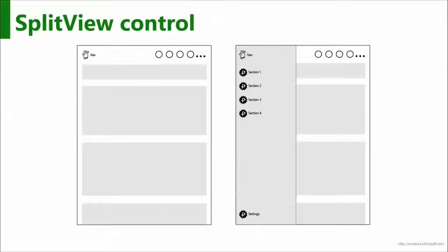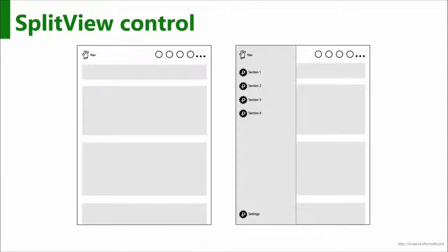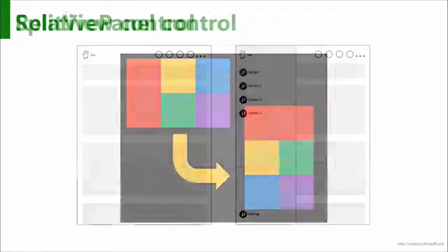Specifically, we now have the split view control. Split view is sort of a navigation affordance — it allows us to see a menu on the side. You kind of have the hamburger menu. It really has no UI at all; it's up to the developer to skin that to look the way you want it to.